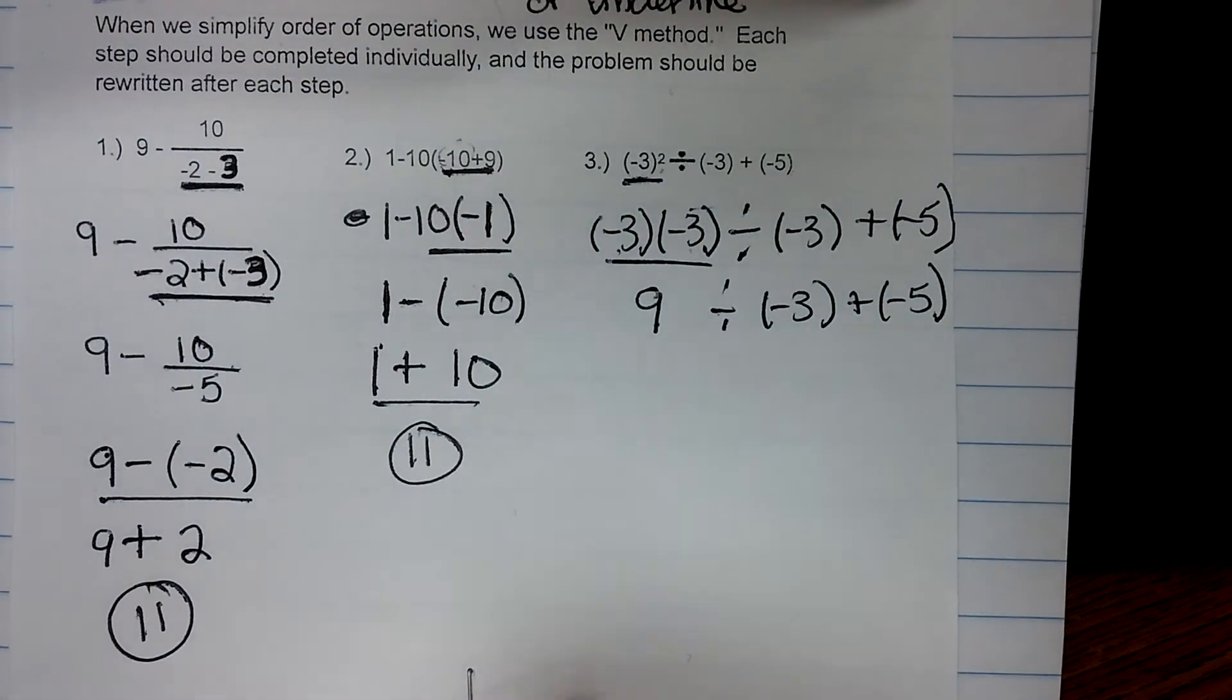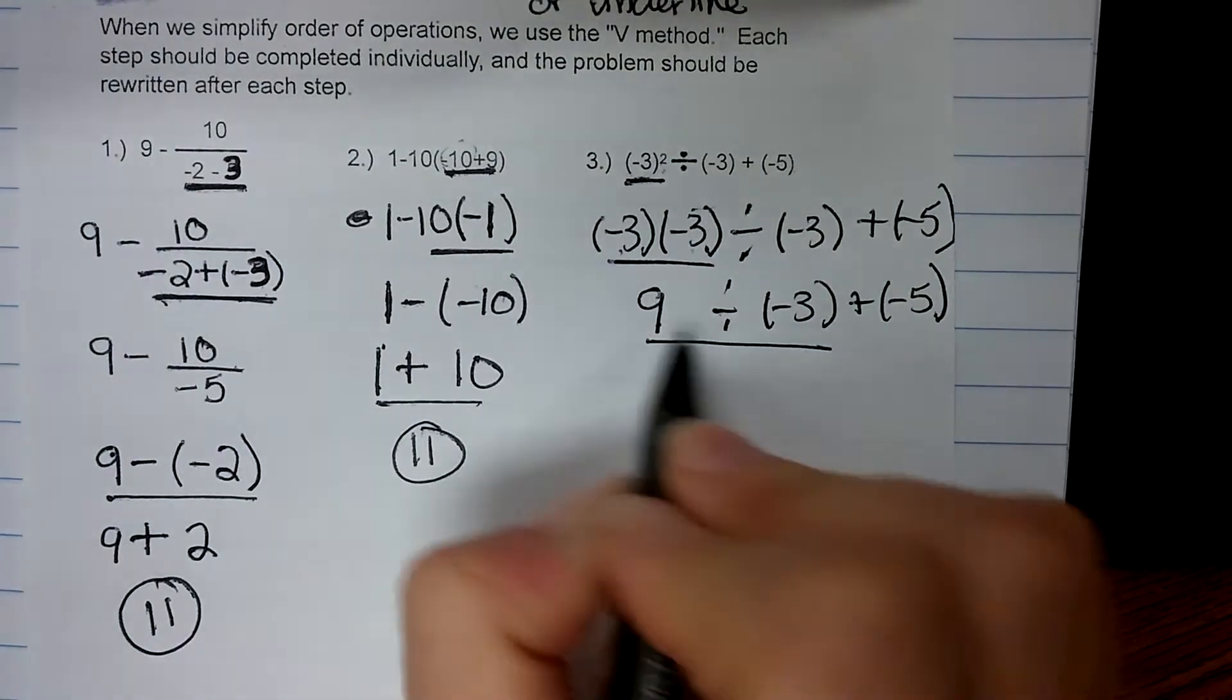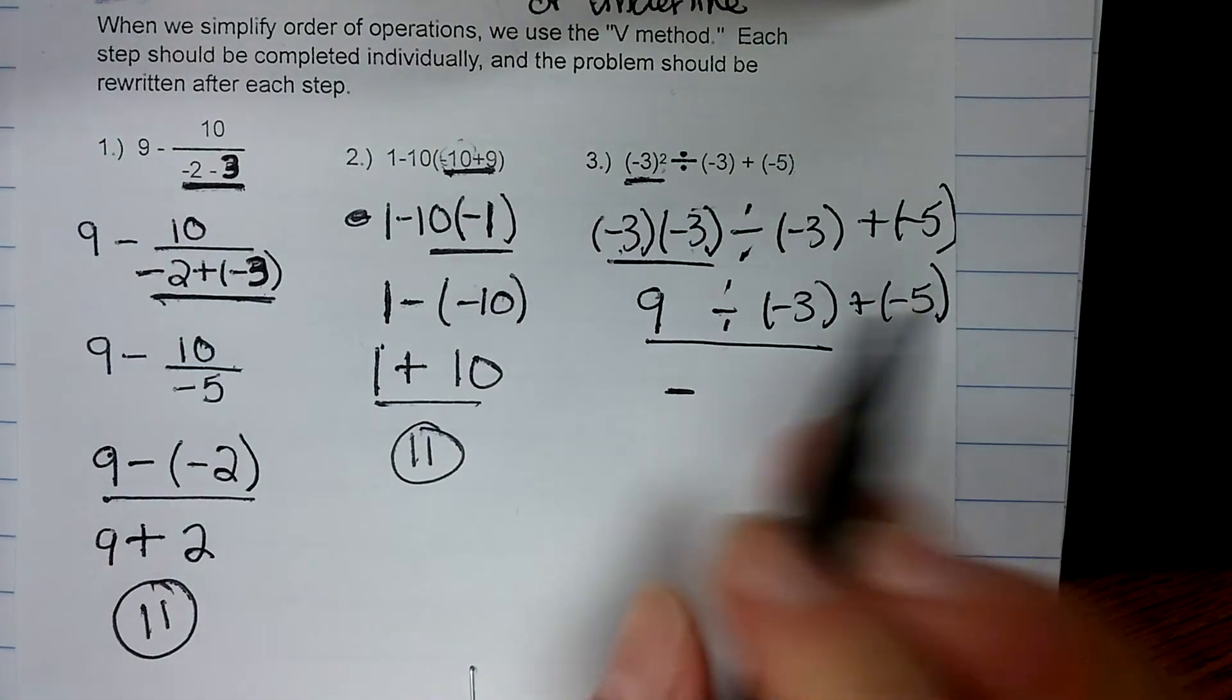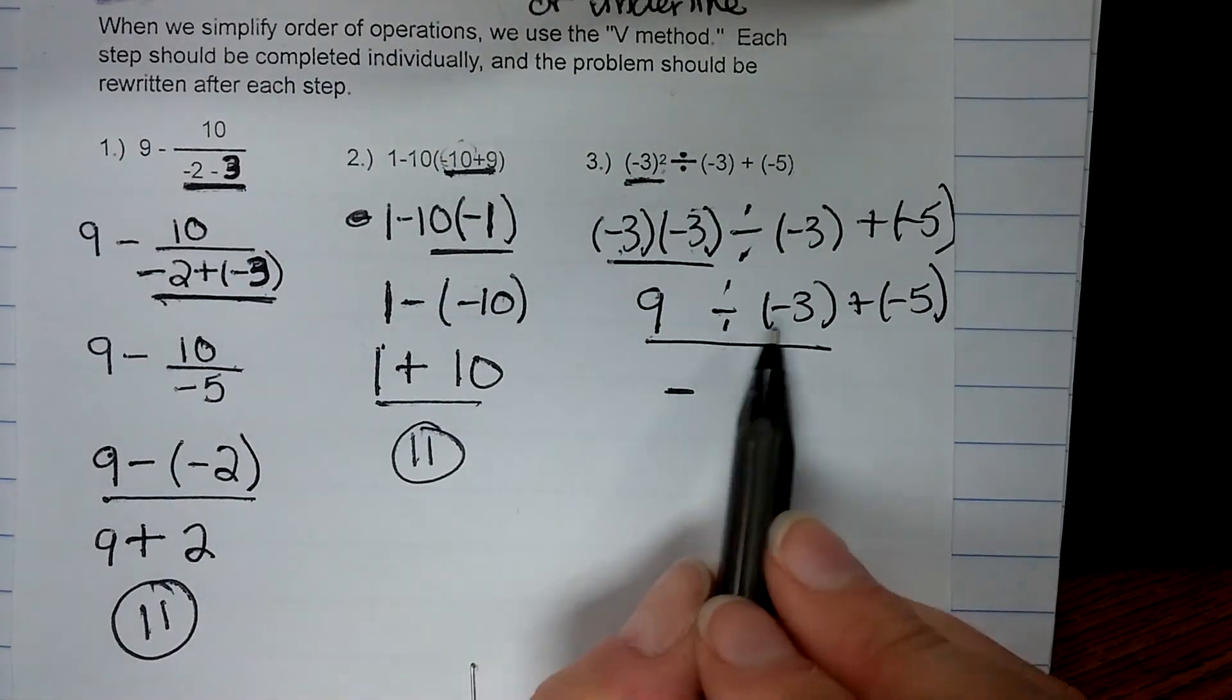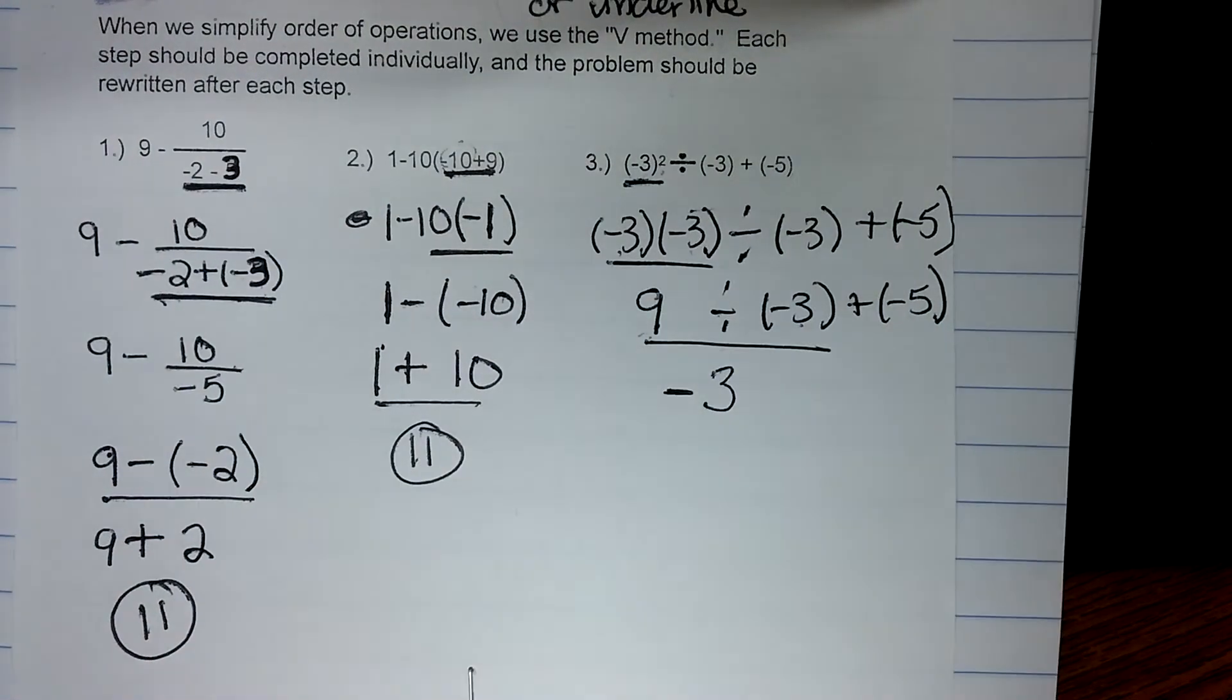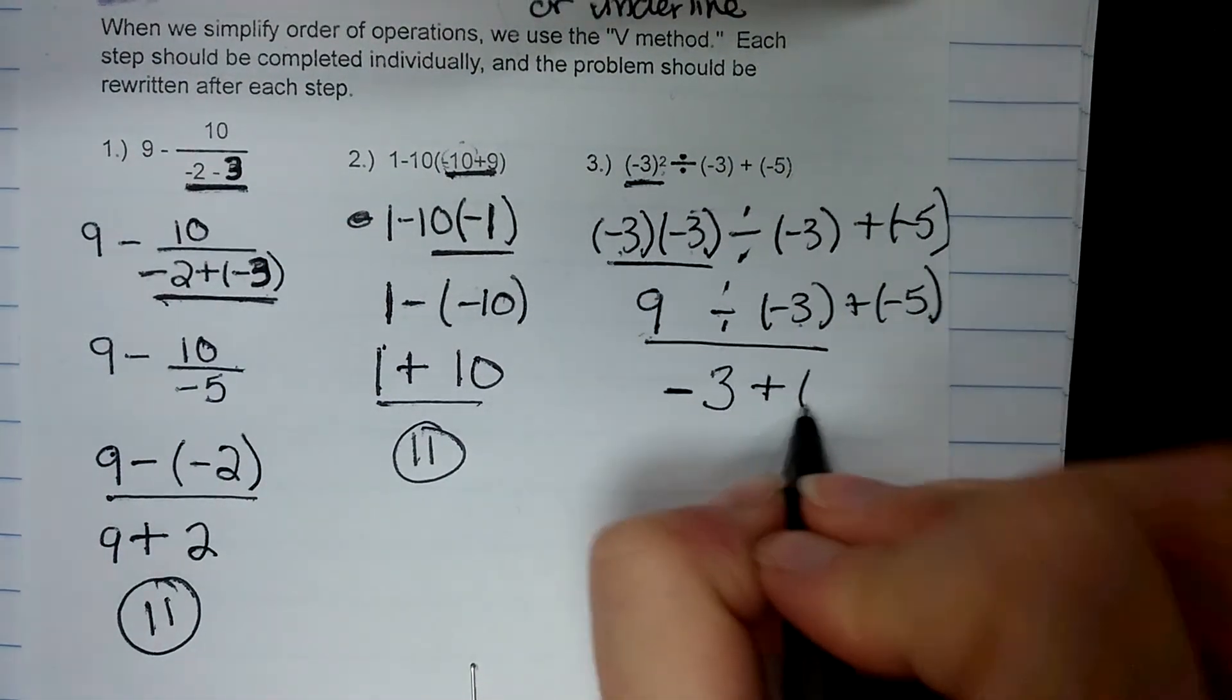My next step is going to be division. 9 divided by negative 3. Signs are opposite. My answer is going to be negative. So negative, and then 9 divided by 3 is 3. Keep the 3. Plus negative 5.